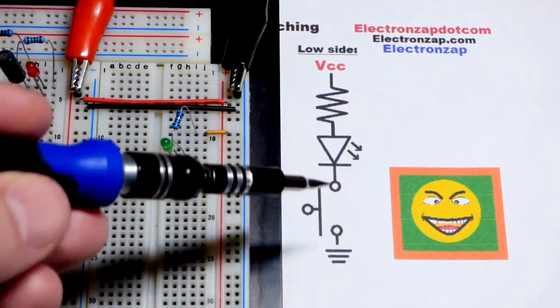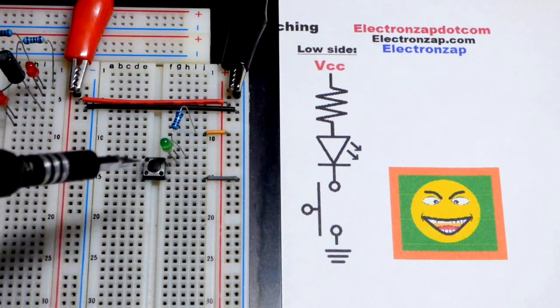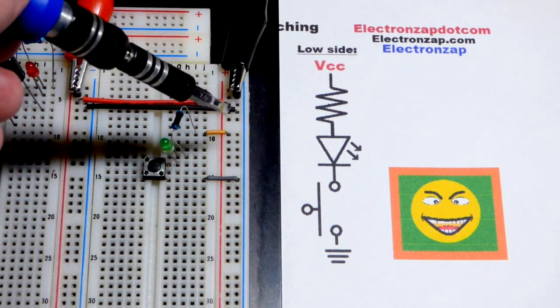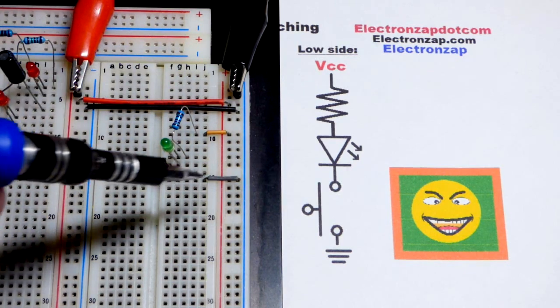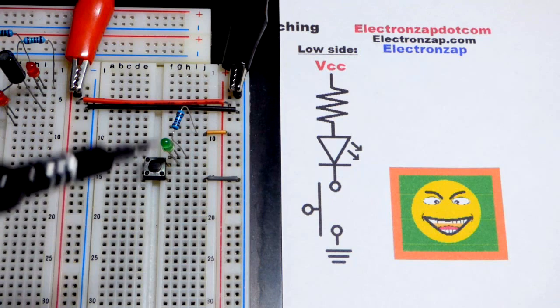So now we have the switch on the low side of the circuit and so it's not that it's lower on the breadboard. It's just that up there is more positive. Down here is more negative. It's the positive versus negative.